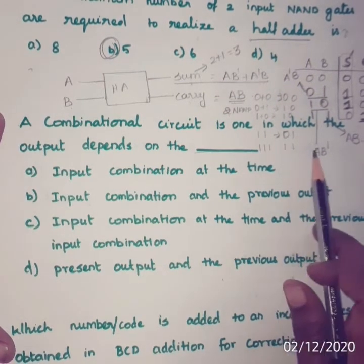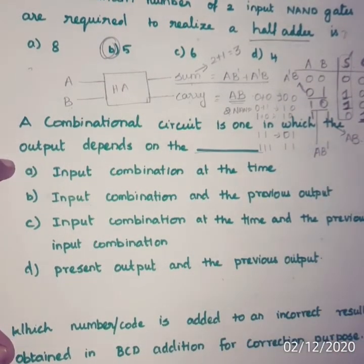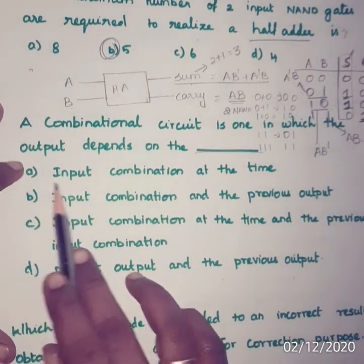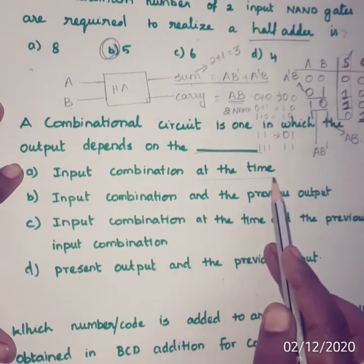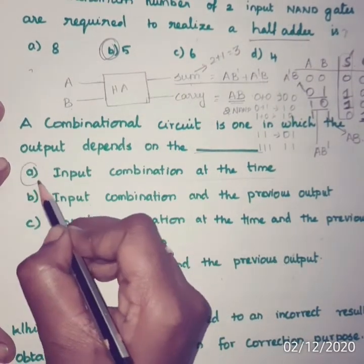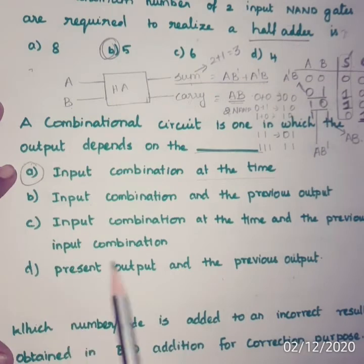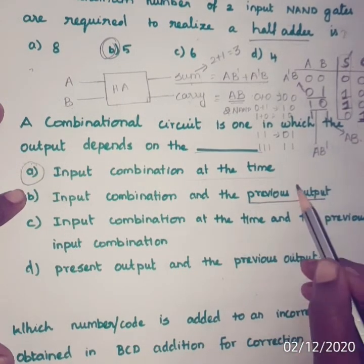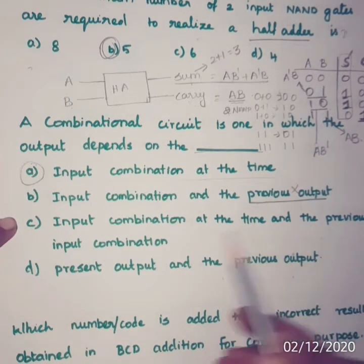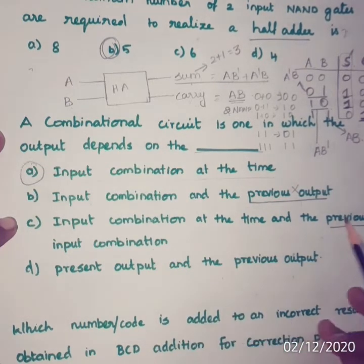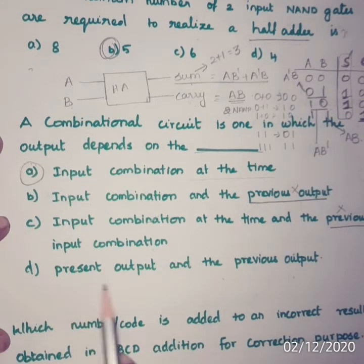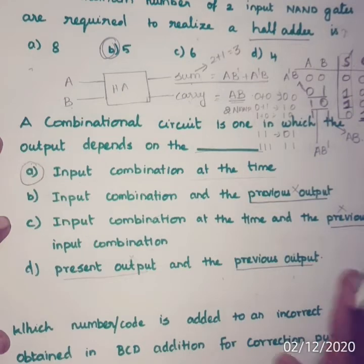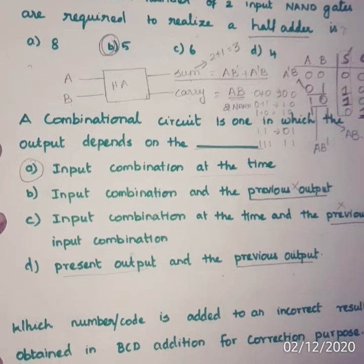Next question: a combinational circuit is one in which the output depends on the blank. A combinational circuit output depends upon the present input only. Option A, 'input combinations at the time,' means present input — that is correct. Option B adds 'previous output,' which is wrong. Option C adds 'previous input combination,' which is also wrong. Option D references present and previous output — both wrong. The output of a combinational circuit depends upon the present input only.